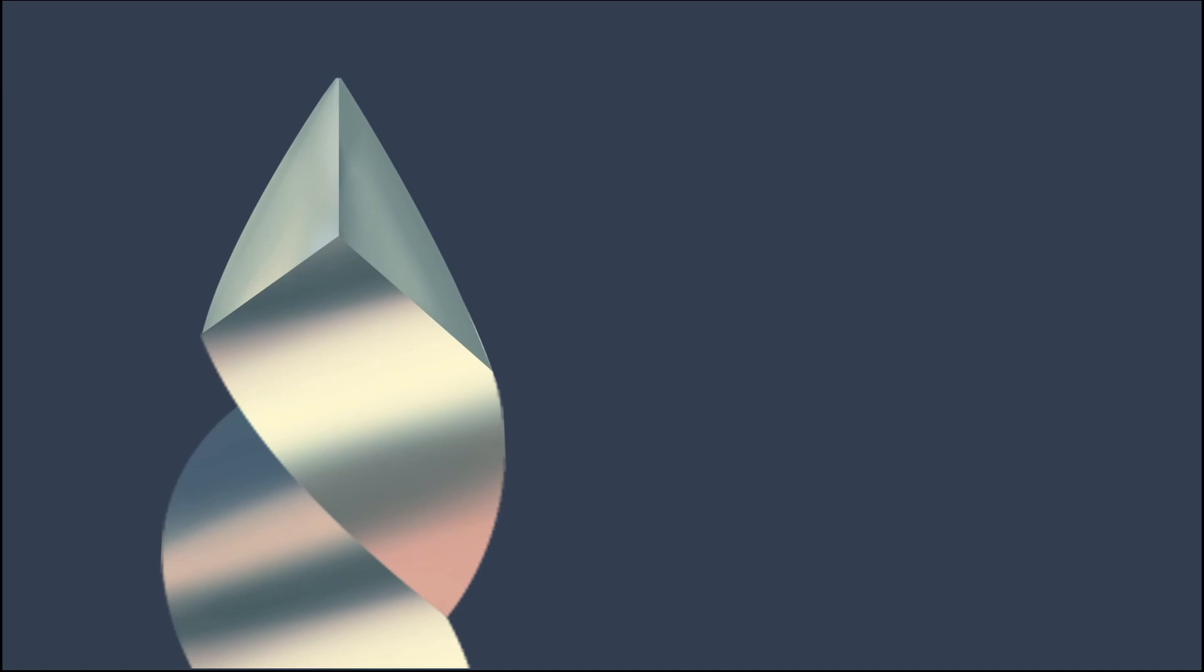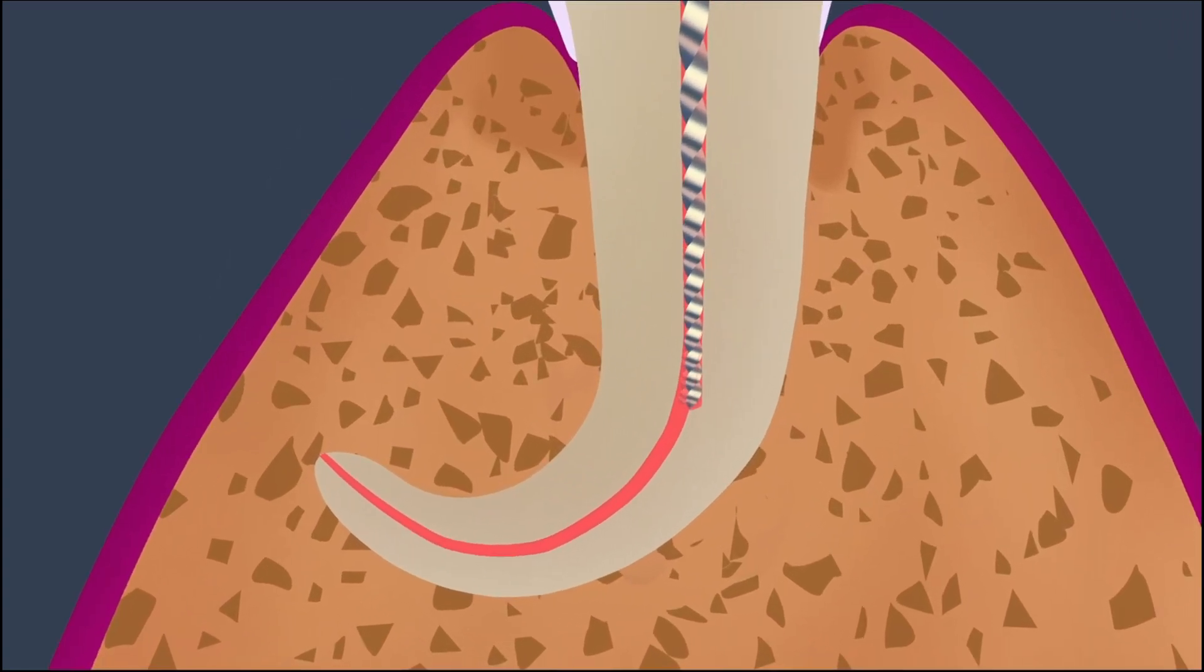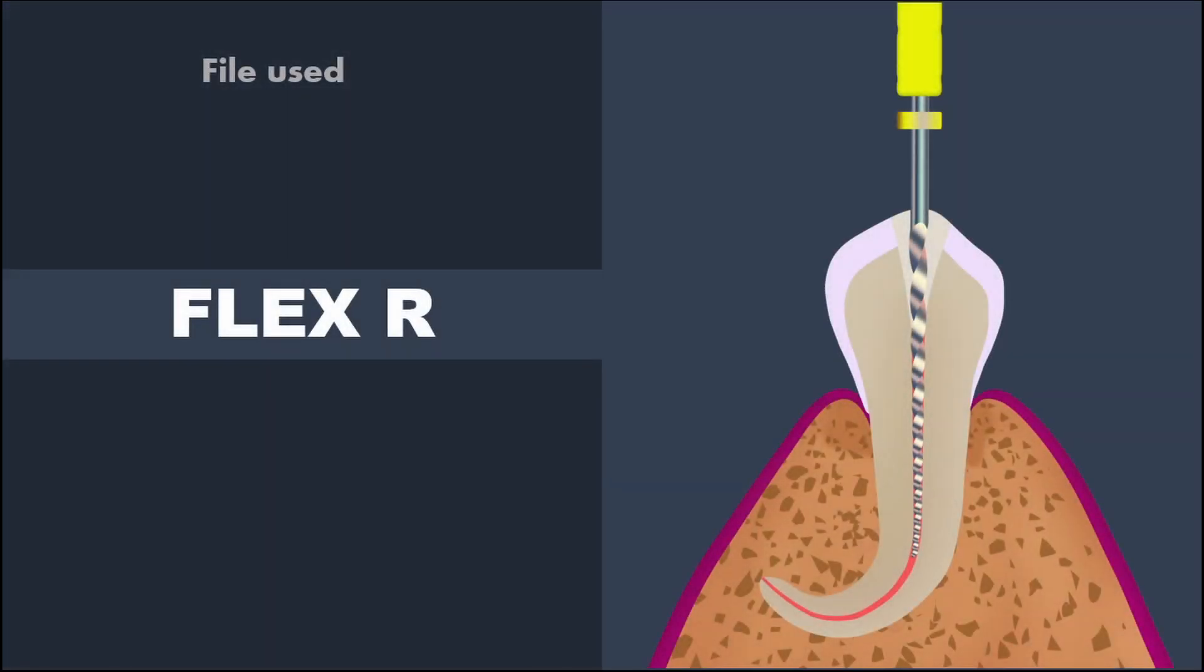One of the problems that hindered preparation of curved root canals was the existing endodontic files. The conventional K-files used for cleaning and shaping had a short transition angle at the tip. If this file is used incorrectly or rotated inside the root canal, it often led to the formation of ledges and canal straightening in curved canals. So the file was modified and a new type file was introduced which must be used while doing balanced force technique.